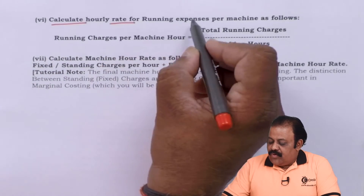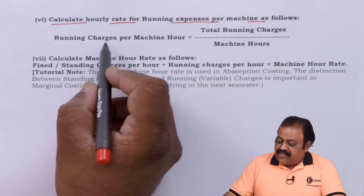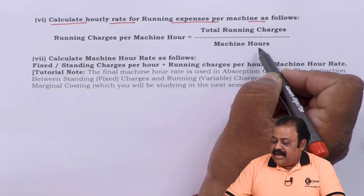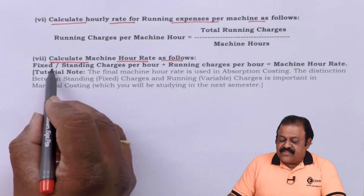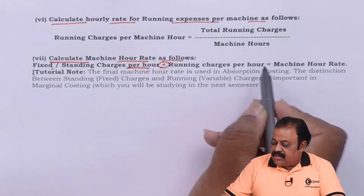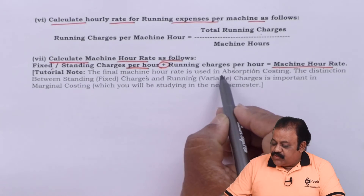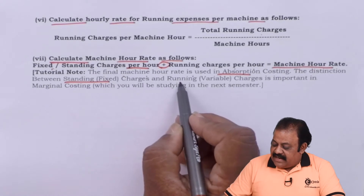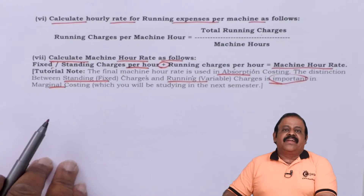To calculate hourly rate for running expenses, use the formula: Running Charges per Machine Hour = Total Running Charges ÷ Machine Hours. The final Machine Hour Rate = Fixed/Standing Charges per Hour + Running Charges per Hour. The final machine hour rate is used in absorption costing. The distinction between standing fixed charges and running charges is also important in marginal costing.